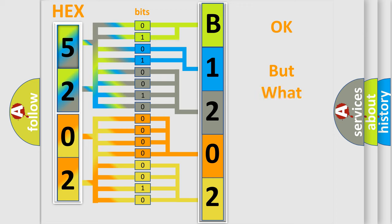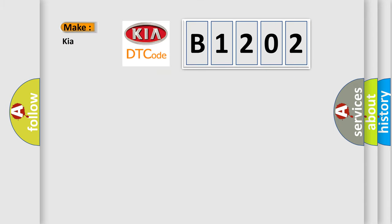The number itself does not make sense to us if we cannot assign information about it to what it actually expresses. So, what does the diagnostic trouble code B1202 interpret specifically for Kia car manufacturers?